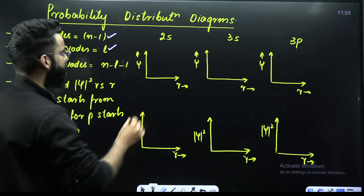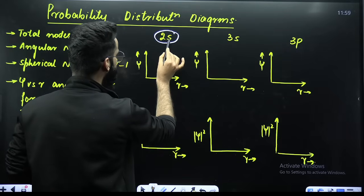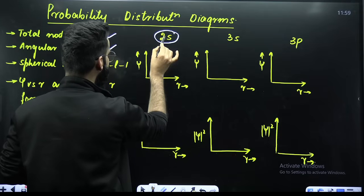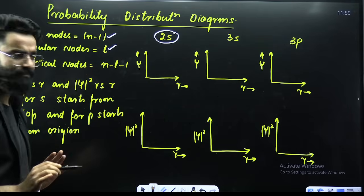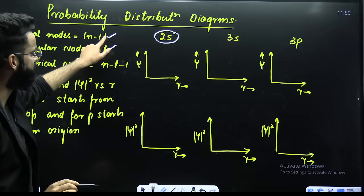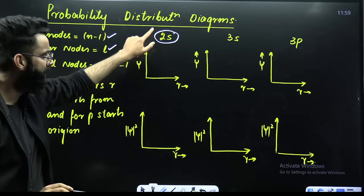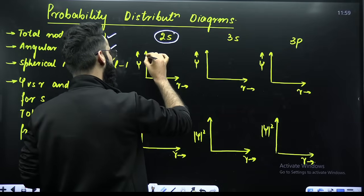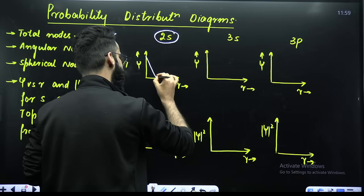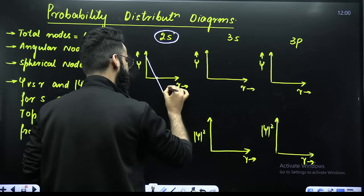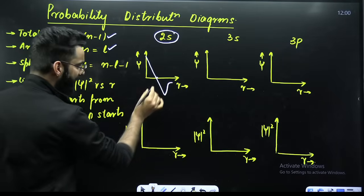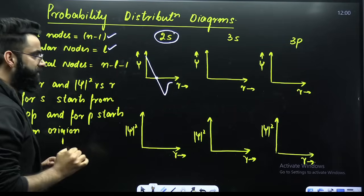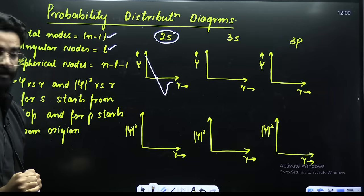For example, in case of 2s, n value is 2, l value is 0. So there'll be in total one node, because total number of nodes is n minus 1, so 2 minus 1 comes out to be 1. All the 2s graphs start from the top, so here they touch the R axis and the graph comes like this. At this particular point it represents that node in case of 2s.